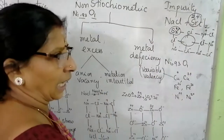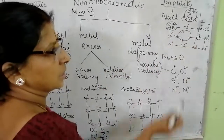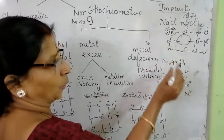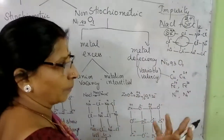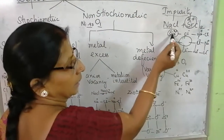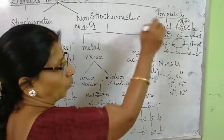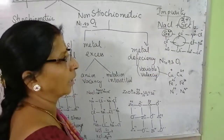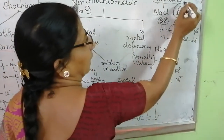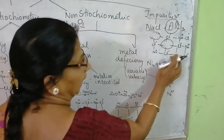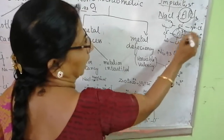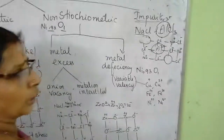Different valent metal ions: one occupies the other's place. In order to satisfy electrical neutrality, 2 Na⁺ ions are missing from their lattice points. One strontium ion is occupying one of the places of the sodium ion. If instead I put aluminium chloride, aluminium valence is 3+, so 3 Na⁺ ions have to go missing, but aluminium occupies only one place. This is called impurity defect.